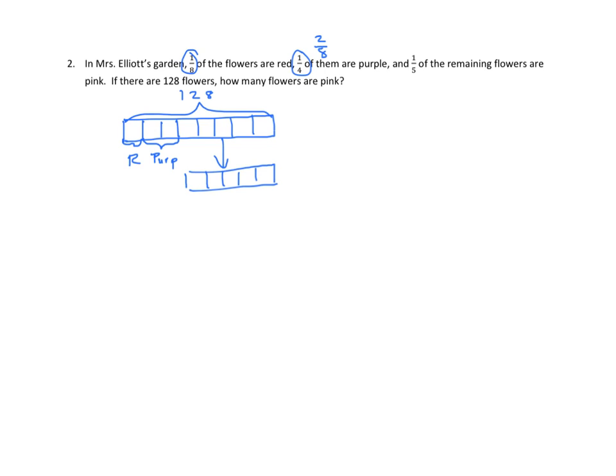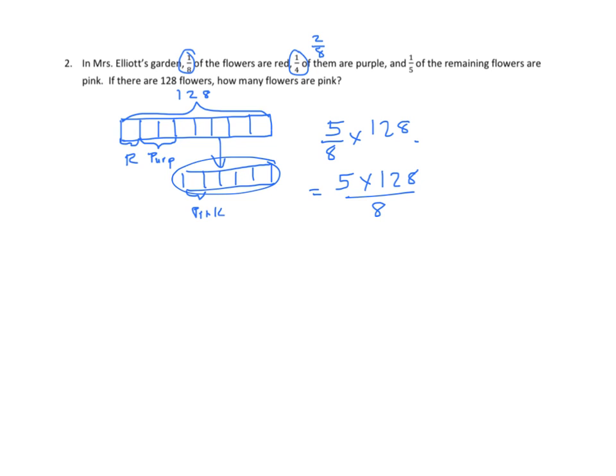So what do we do with this? We'll bracket one of these. We'll call it pink. And now we need to find out how many flowers are left over, how many are remaining. And if we look at our diagram, we see five-eighths. So we have five-eighths times 128. That will give us the total amount here. So that equals five times 128 over eight. We can do some division here. 128 divided by eight is 16. Eight divided by eight is one. And I end up with 80. So there are five times 16 is 80 flowers left over.